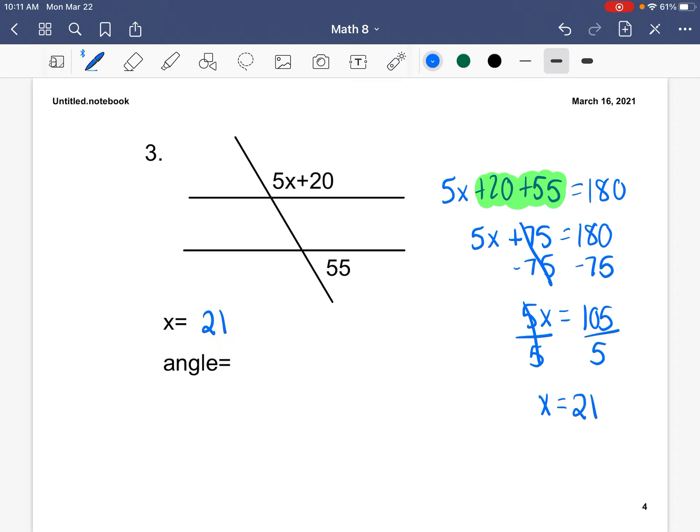So now we know our x, and we need to use our x to figure out our missing angle. So we plug 21 in for x by using parentheses around 21. So that gets us 125.